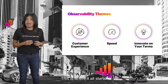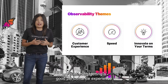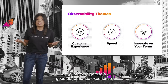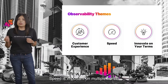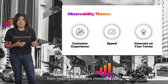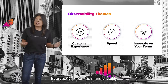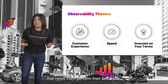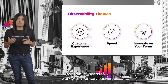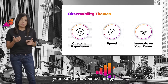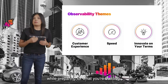The first theme: customer experience. This is where it all starts. Observability helps us answer questions like — are customers getting a good performance experience from our website? Two: speed. Speed is important on multiple fronts, from helping developers innovate faster to getting answers on why problems are happening immediately. Three: innovate on your own terms. Observability needs to work with your services, your people, and your technology — helping you run what you have while preparing for what you're building.